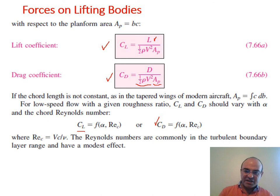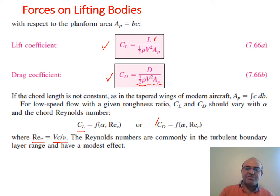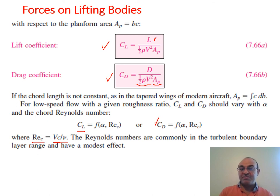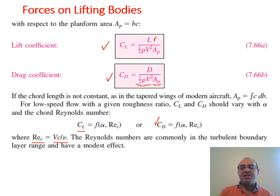Reynolds numbers for aircraft are commonly in the turbulent range. Reynolds number can be obtained in terms of the chord length C. Since the speed of the aircraft is large and dimensions are large, we are usually in the turbulent region. Because Reynolds number is very large, these coefficients become relatively insensitive to Reynolds number. If you recall from the drag curves in previous chapters, for large Reynolds numbers and a flat plate, the drag coefficients become independent of Reynolds number.